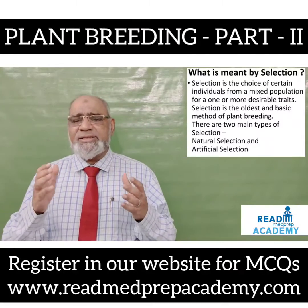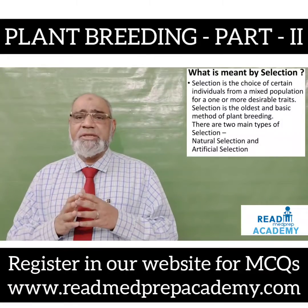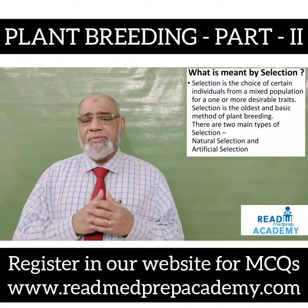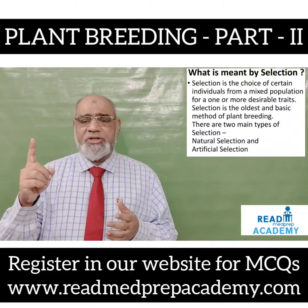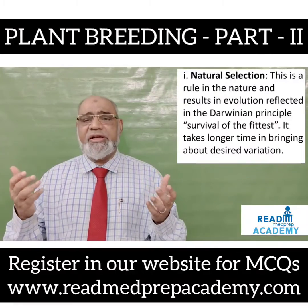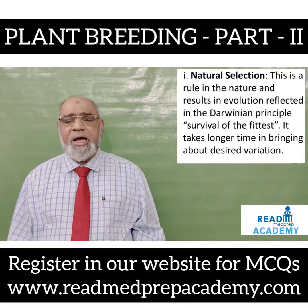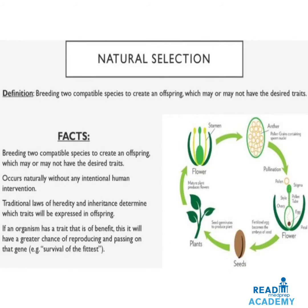What is meant by selection? Selection is the choice of certain individuals from a mixed population for one or more desirable traits. Selection is the oldest and the basic method of plant breeding. There are two main types of selection: natural selection and artificial selection. Natural selection is a rule in nature and results in evolution reflected in the Darwinian principle — the survival of the fittest. It takes longer time in bringing about the desired variation. Natural selection occurs naturally without any intentional human intervention; traditional laws of heredity and inheritance determine which traits will be expressed in the offspring.